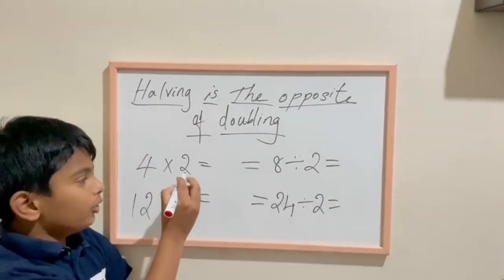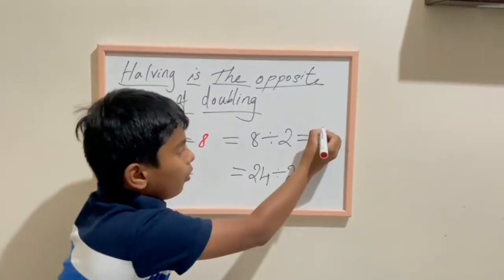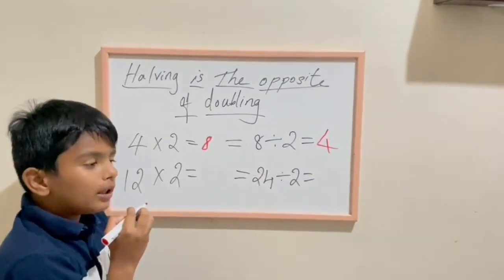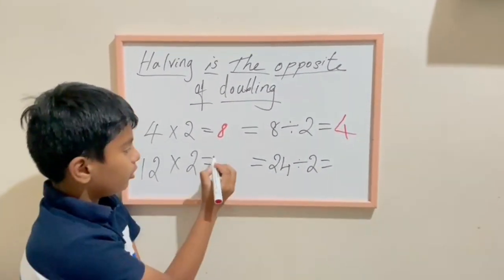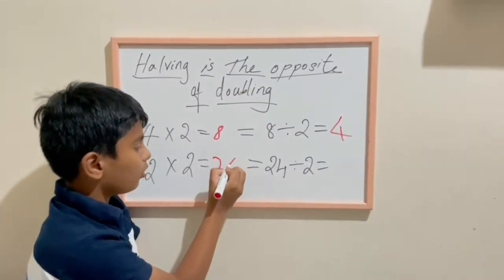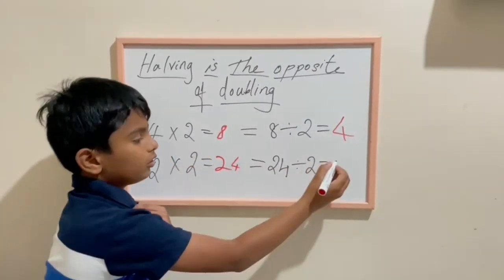For example, 4 times 2 equals 8. 8 divide 2 equals 4. So if you don't know doubling, go and watch my number 2 video. 12 times 2 is 24. 24 divide 2 is 12.